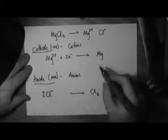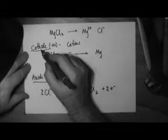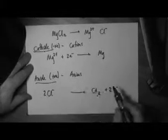So the products of this electrolysis would be magnesium at the cathode and chlorine at the anode.